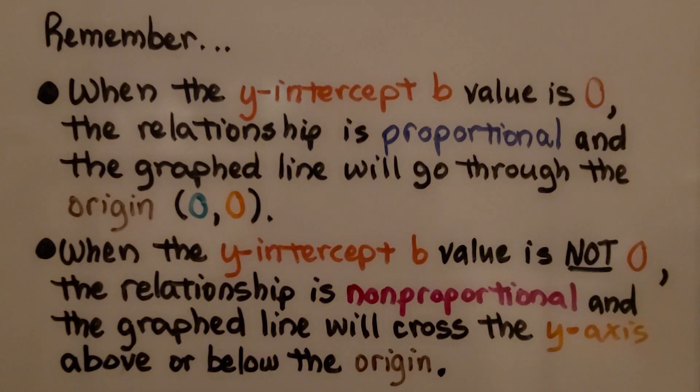Remember, when the y-intercept b value is 0, the relationship is proportional and the graphed line will go through the origin (0,0). When the y-intercept b value is not 0, the relationship is non-proportional and the graphed line will cross the y-axis above or below the origin.